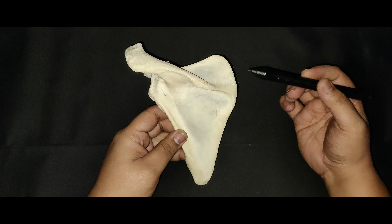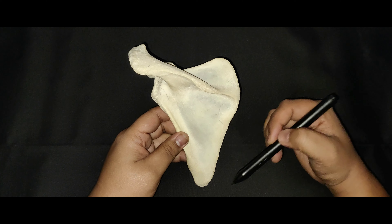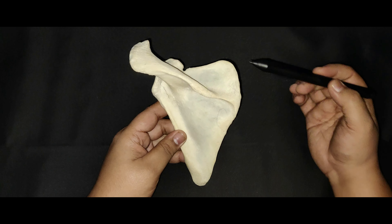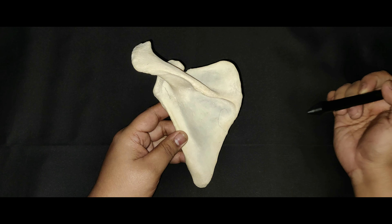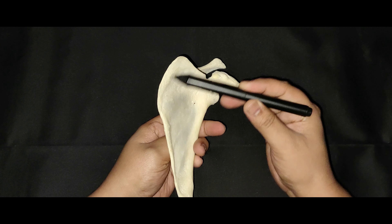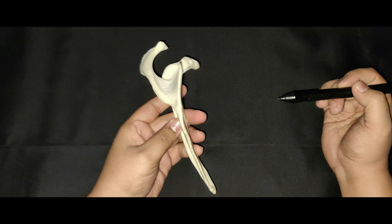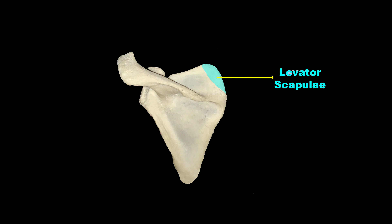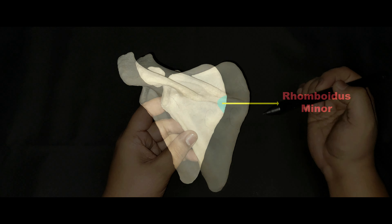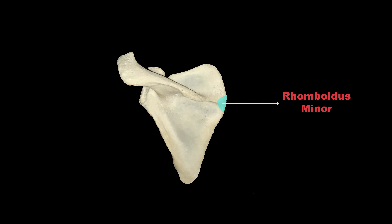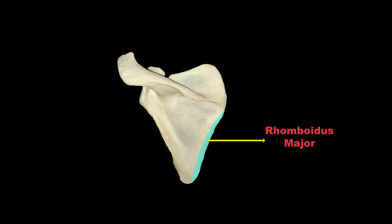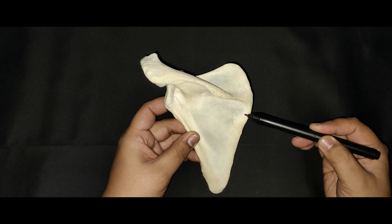The medial border is also called the vertebral border. It extends from the superior angle to the inferior angle. This border is thinned and it is angled at the root of the spine. The serratus anterior muscle is inserted on the costal surface of the medial border and the inferior angle. The levator scapulae muscle is inserted on the dorsal aspect of the medial border from the superior angle to the root of the spine. The rhomboideus minor muscle is inserted on the dorsal aspect of the medial border opposite to the root of the spine, while the rhomboideus major muscle is inserted from the root of the spine to the inferior angle.